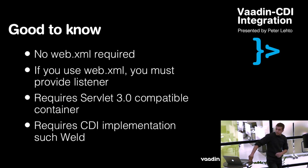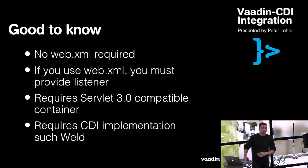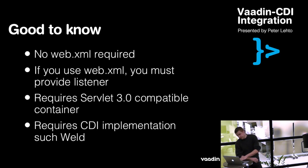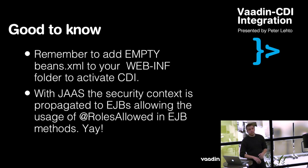A couple of things to know: you don't need a web.xml, but if you decide to use one you'll have to specify a listener, as the automatic deployment mechanism in Vaadin CDI uses a ServletContextListener which is required to run in order to deploy the UIs. Since UIs and servlets are deployed dynamically, the Servlet 3.0 API is used, so you'll need a container that supports that. A CDI implementation such as Weld is also required — if you just use Tomcat 7 it won't work unless you add the CDI implementation JAR. Also importantly, add an empty beans.xml (zero bytes) into your WEB-INF folder in order to activate CDI, otherwise the context deployer won't be able to find it.